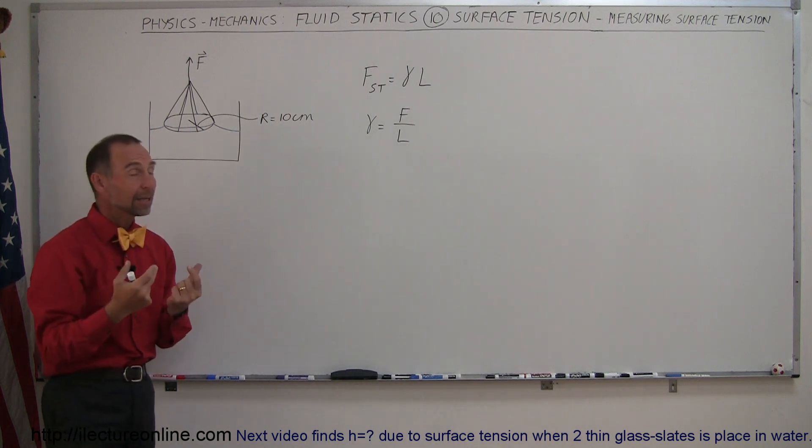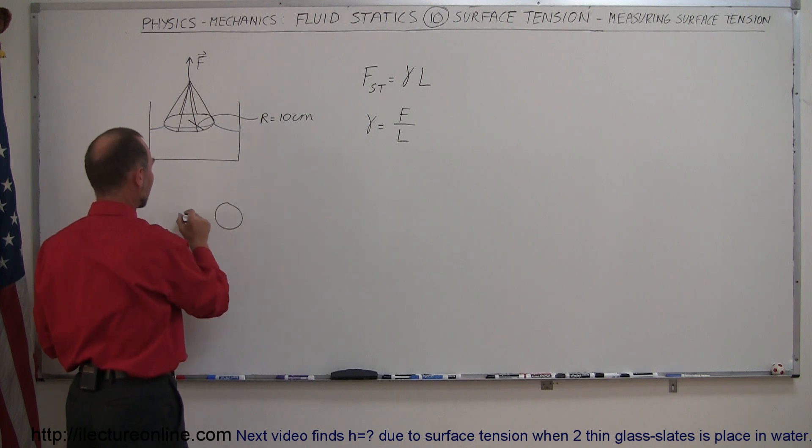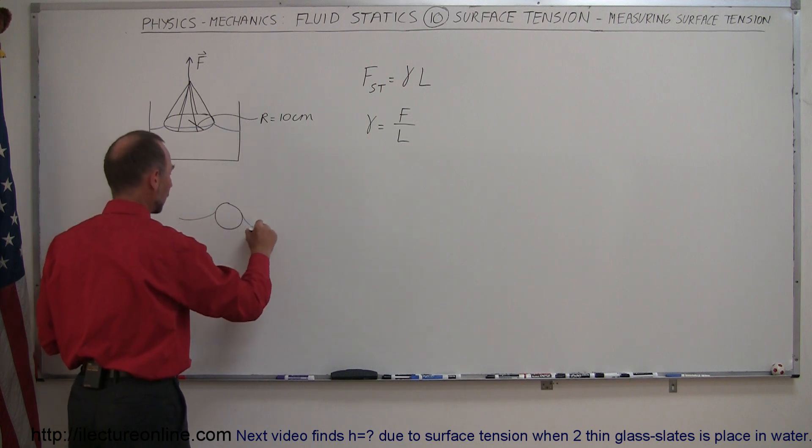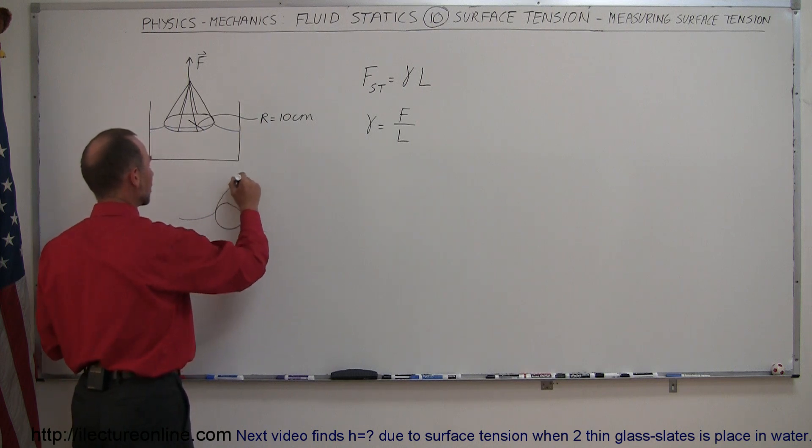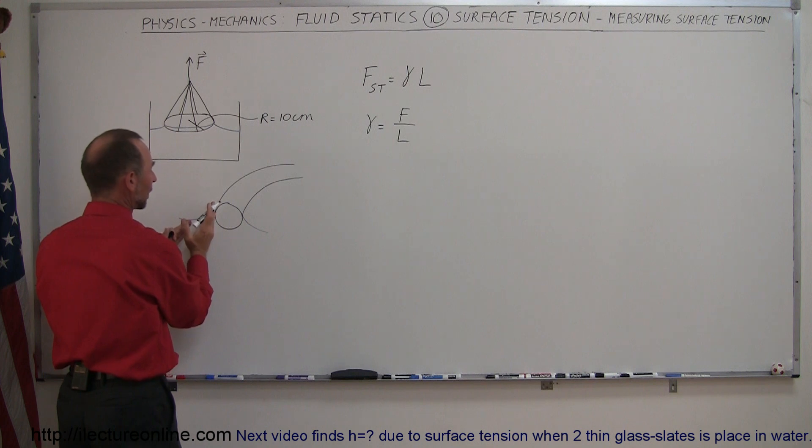Now, what is the length equal to? Well, if you think about it, if this is the wire and here's the liquid that gets pulled up with it due to the surface tension, notice that this wire has two sides. So you have to take into account the inner and outer radius.